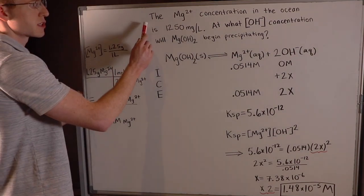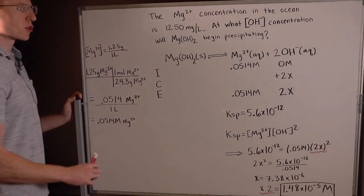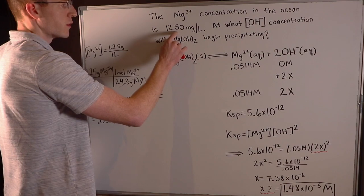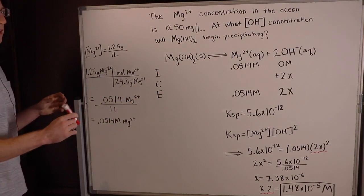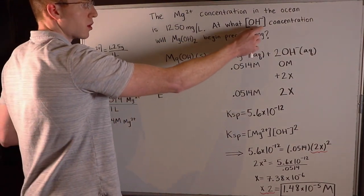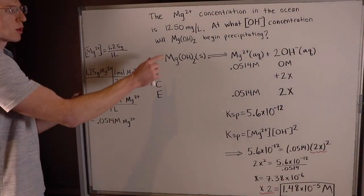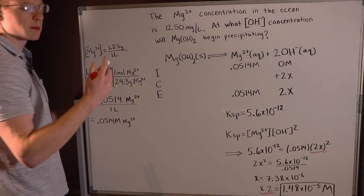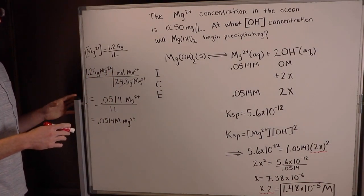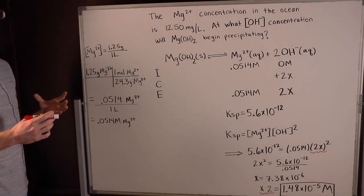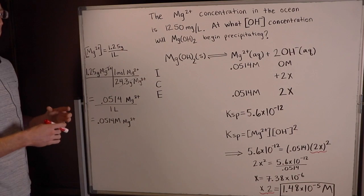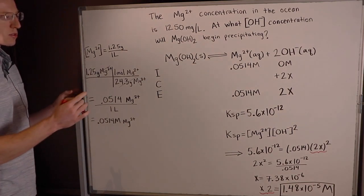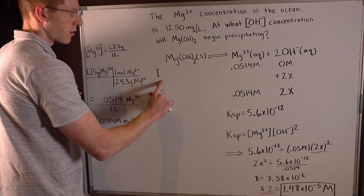This next problem says the Mg²⁺ concentration in the ocean is 1,250 milligrams per liter. At what hydroxide (OH⁻) concentration will magnesium hydroxide, Mg(OH)₂, begin precipitating? This is another KSP solubility or precipitation problem. The first thing I like to do for these problems is write an ICE table for the solubility reaction.